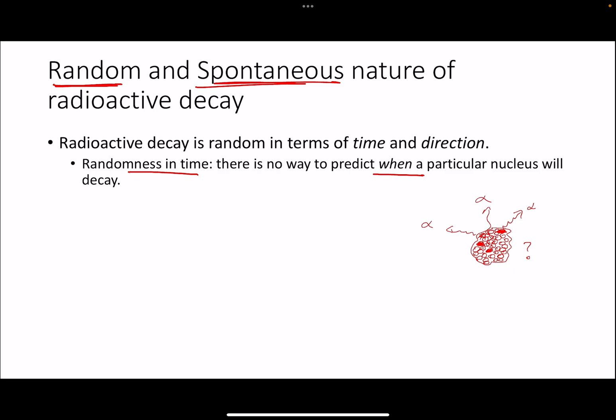There is no way to predict that. We can't predict in which direction the alpha particle is going to go. So radioactivity is also random in direction. There's no way to predict in which direction the radiation will be emitted.